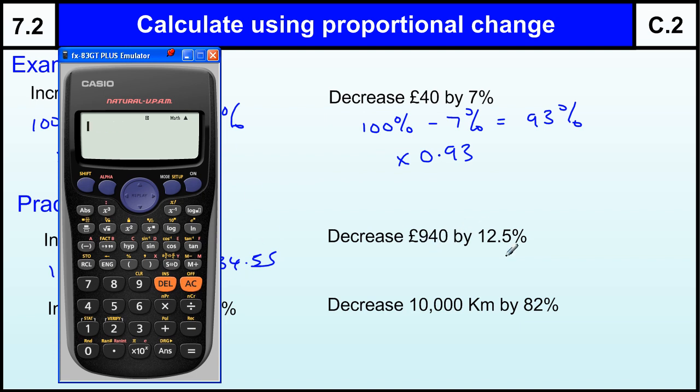Okay, to decrease by 12.5%, so 100 take away 12.5% is 87.5%. If you're not sure you could use a calculator because this is a calculator-based question. And 87.5% is the same as times by 0.875. So 940 times by 0.875 equals £822.50.